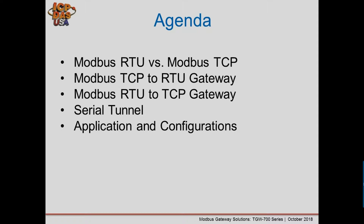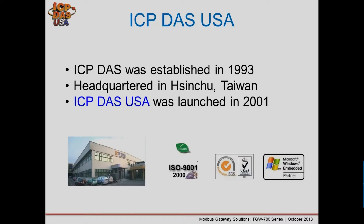A little about ICP-DOS: established in 1993, headquarters in Chinchu, Taiwan. ICP-DOS USA was established in Southern California in 2001 to support North and South American markets. The company is ISO 9001 certified, a Windows Embedded partner, and all products are RoHS compliant.